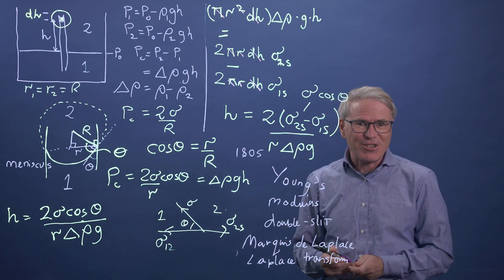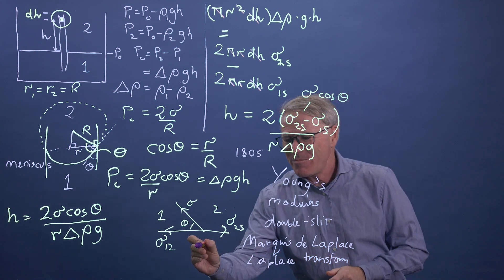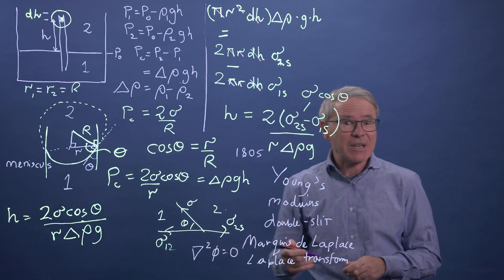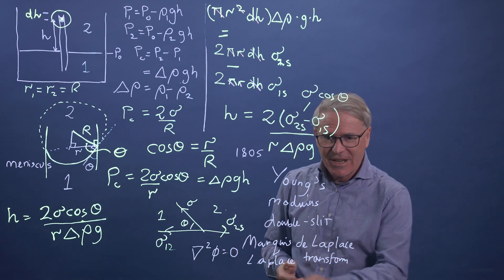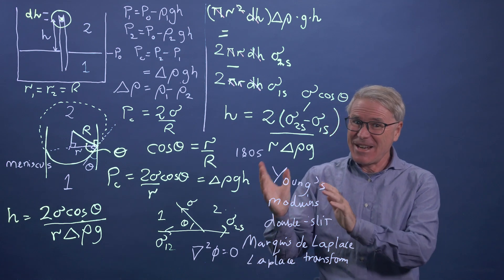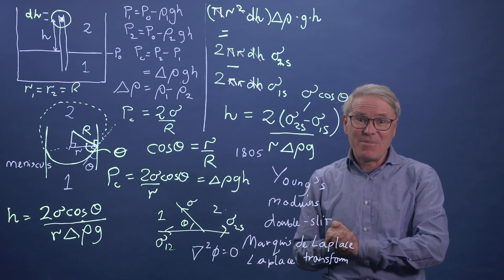We're not being unfair to Laplace. Laplace obviously was French. We're not being unfair to him because he has his own equation. Laplace's equation, del squared phi equals zero. So this could be a potential, for instance, in free space. So Laplace has his equation. So that's why we have to have Young, he has his equation, and Young Laplace, where we combine the two.